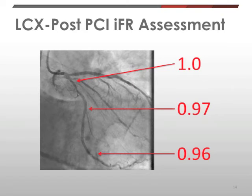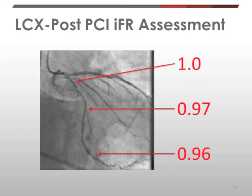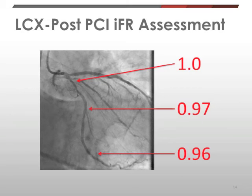We then re-measured physiology after stenting. The IFR between lesions A and B — position A, where the original measurement was 0.95 — was now 0.97, essentially a very similar measurement with minor variability. After positioning the wire distal to where the stent was implanted, however, the IFR had increased significantly to 0.96. This is a very good result for our patient.